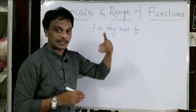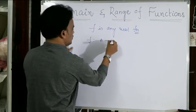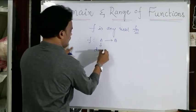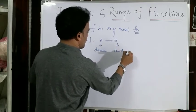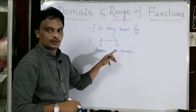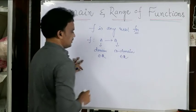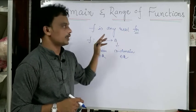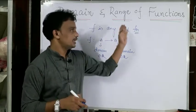First of all, what are real functions? F is any function which is defined from A to B, where A is called the domain and B is the co-domain. Now, both domain and co-domain belong to the real numbers. Then those types of functions are called real functions. Throughout the chapter, we are going to discuss real functions.